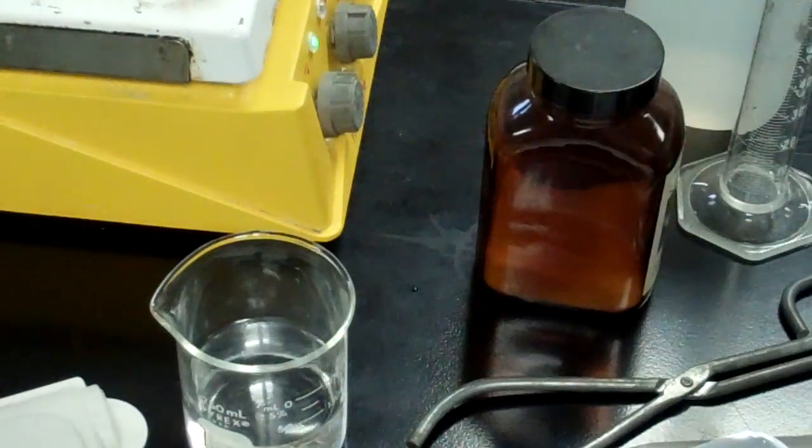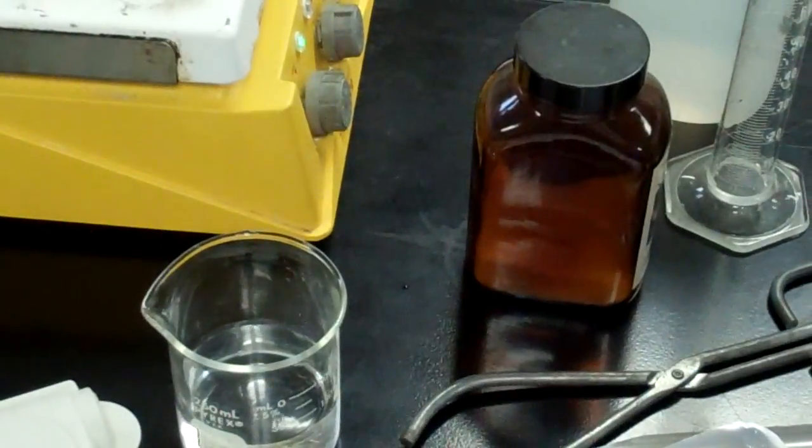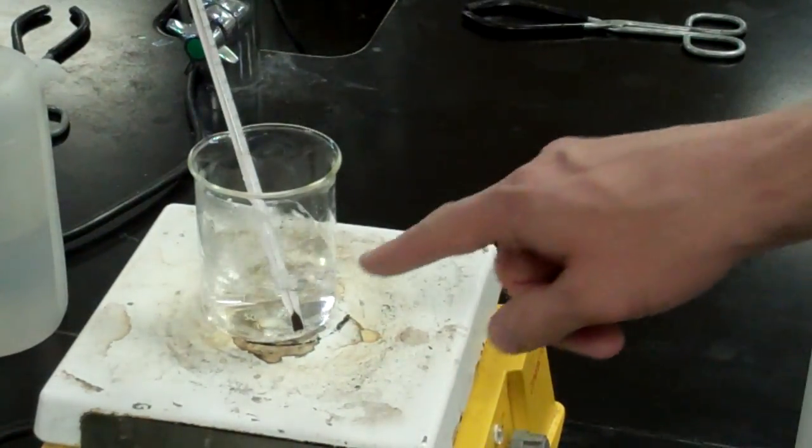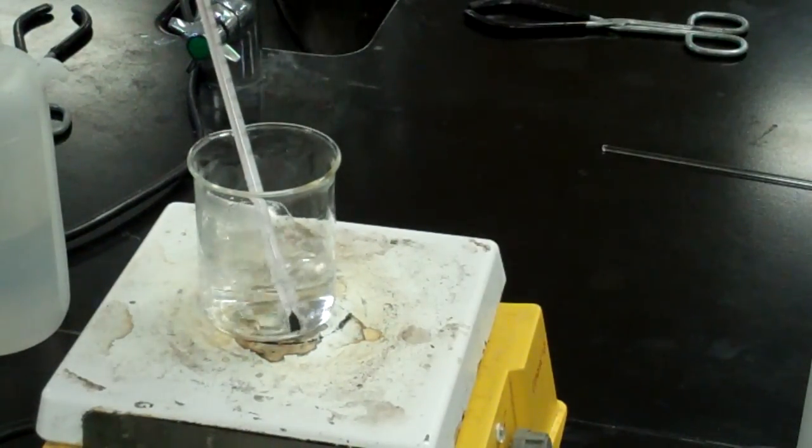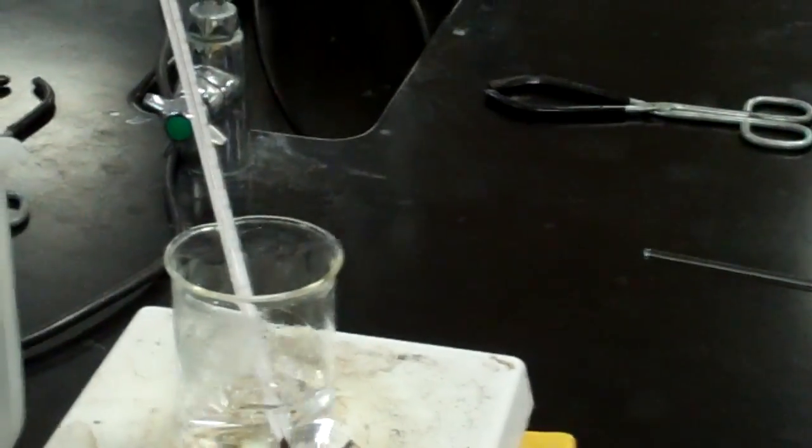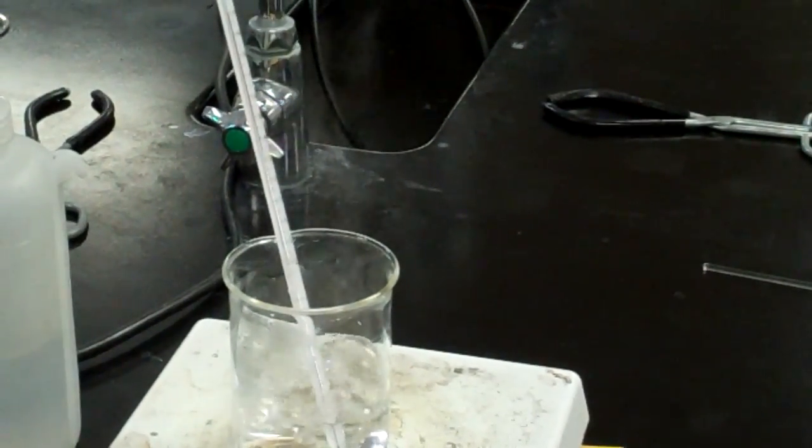Now you're going to measure that boiling point so you're just going to get your beaker with 100 grams of water in it. You'll allow it to come to a rolling boil and you'll measure that temperature. So let's zoom in here. I'm not sure if we'll be able to see it very well here but in fact we can't.